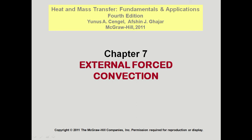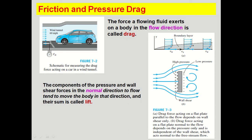Hello everyone. In our heat transfer lecture series today we are going to discuss heat transfer through external forced convection. First we will see about friction and pressure drag. The force a flowing fluid exerts on a body in the flow direction is called the drag force. For example, a vehicle moving in a wind tunnel with wind flowing at 60 meters per hour — whatever force the air applies on the vehicle in the flow direction is called the drag force.